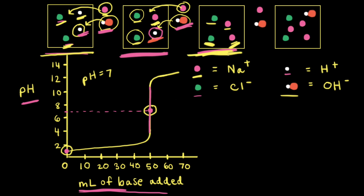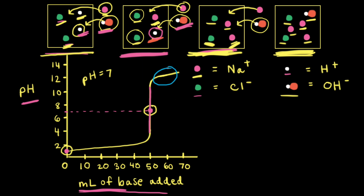Going back to the particulate diagram at the equivalence point, let's add more sodium hydroxide — one more sodium cation and one more hydroxide anion. This time, since there's no more acid to neutralize, the added hydroxide anion remains in solution. The fourth particulate diagram represents the titration after the equivalence point, when we're adding excess base. On the titration curve, we can see that as we continue to add excess base, the pH keeps increasing.